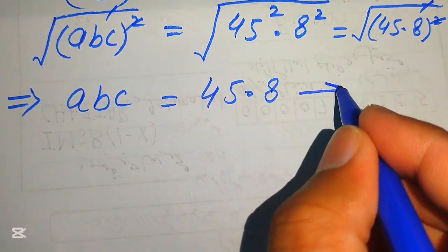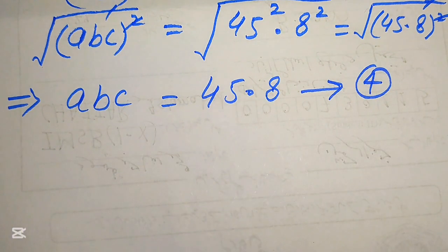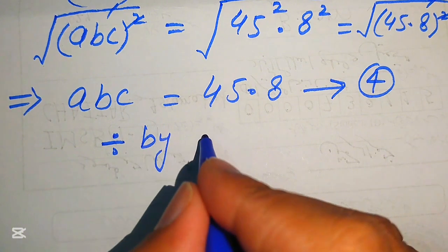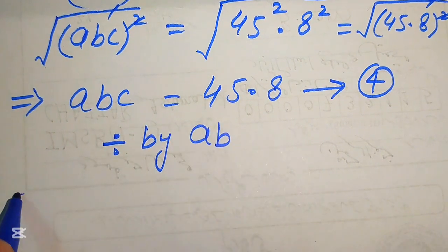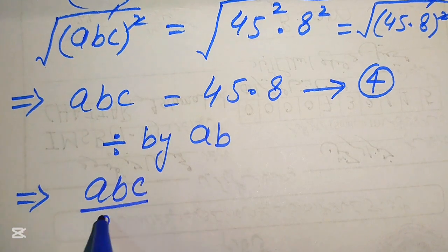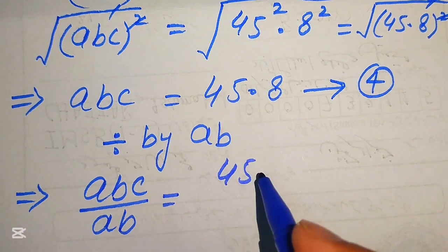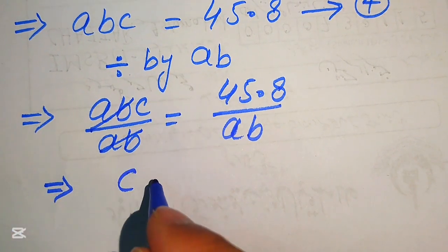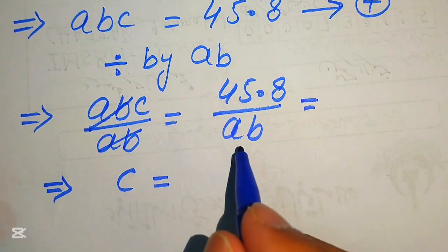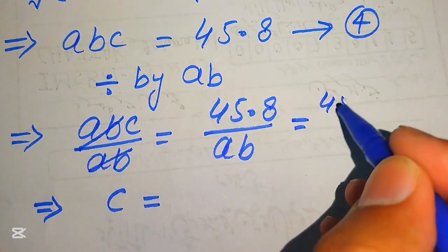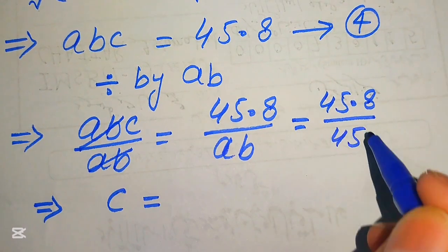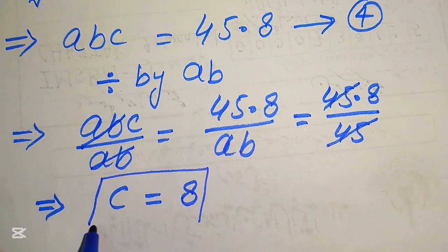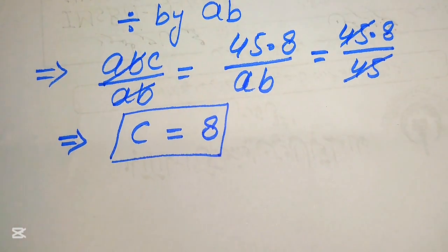We call this equation number 4. To find C, we divide equation number 4 by equation number 1 — that is, we divide both sides by AB. So ABC divided by AB equals 45×8 divided by AB. AB cancels on both sides, and the value of AB from equation 1 is 45. So 45 cancels with 45, giving C = 8. This is a positive real number.